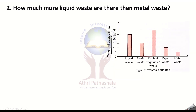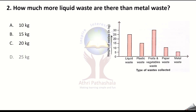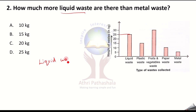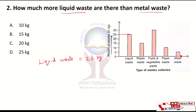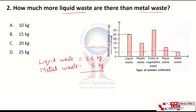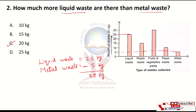Next question: how much more liquid waste is there than metal waste? Liquid waste is 25 kg and metal waste is 5 kg. Therefore, we have to subtract: 25 minus 5 is 20 kg. So 20 kg — that is Option C — is the correct answer.